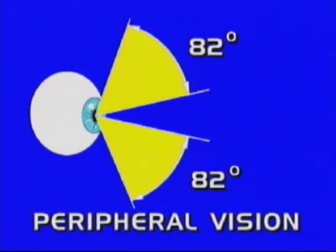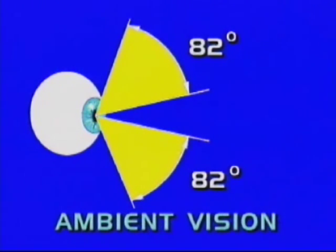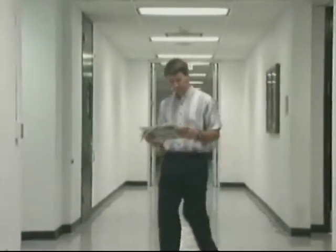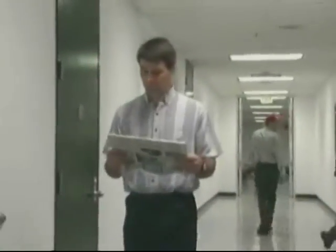Peripheral vision is approximately 82 degrees on either side of the central vision field. Also known as ambient vision, it is involved with perception of motion and attitude cues and provides peripheral reference cues to maintain spatial orientation. This visual capability enables orientation independent from central vision, which is why we can walk straight while reading.